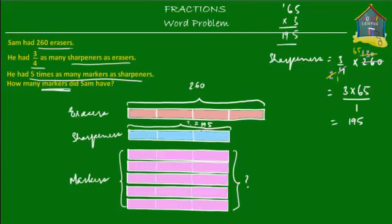So if he had 195 sharpeners, then how many markers did he have? We know that he had five times as many markers as sharpeners, so all we do is five times 195. How much is five times 195?